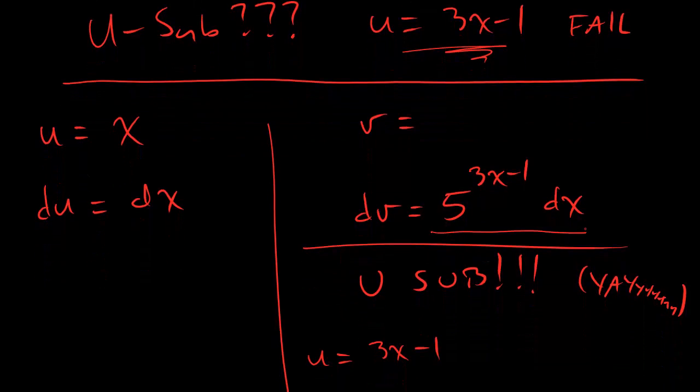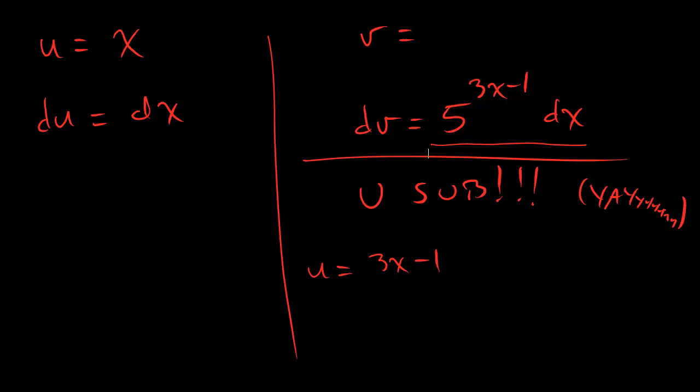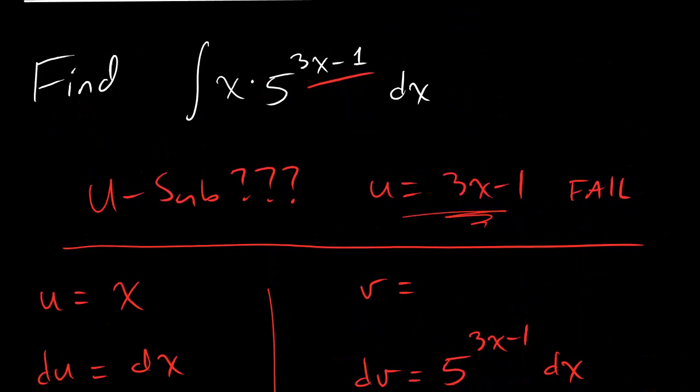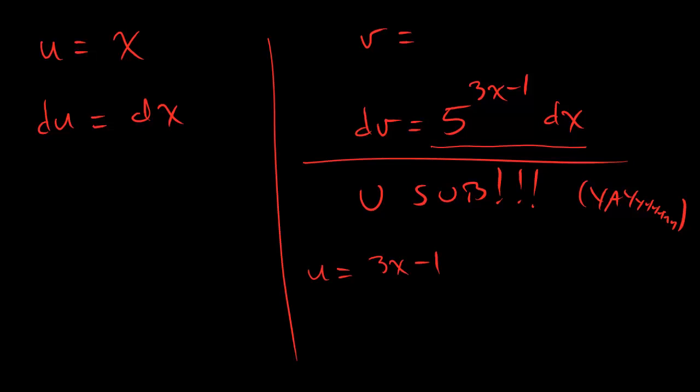When we're trying to find the integral of that in order to fill in this chart, the integral of that is just going to be the integral of 5 to the 3x minus 1. U substitution works great for that because there is no extra x floating around that we have to cancel out. Because there's no extra x floating around, u sub will work great on this guy.